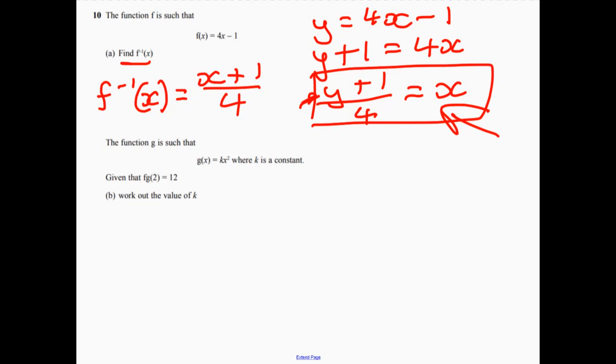Now part b talks about a different function. So we've got function g. Now it says that given that f of g of 2 is equal to 12, work out the value of k.